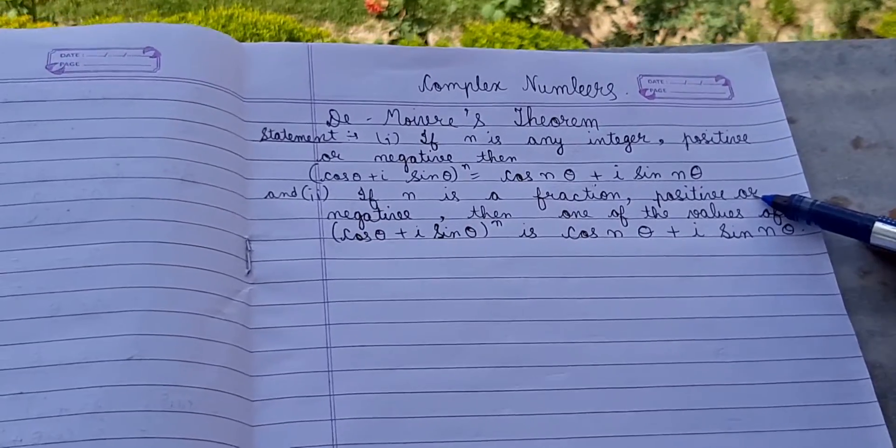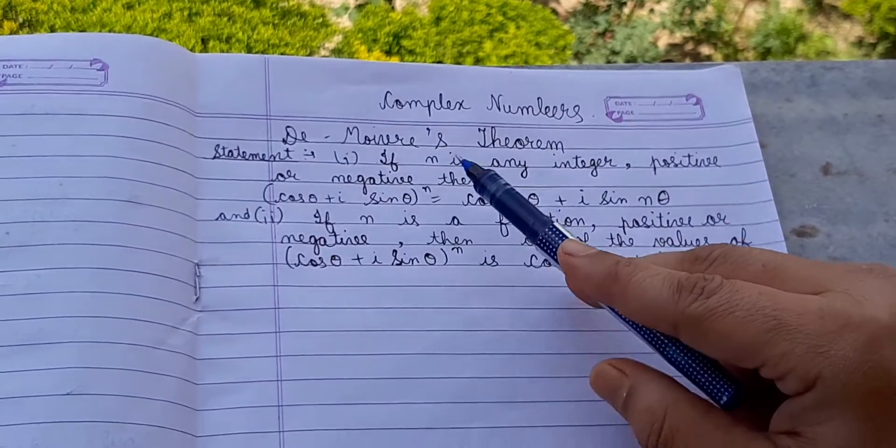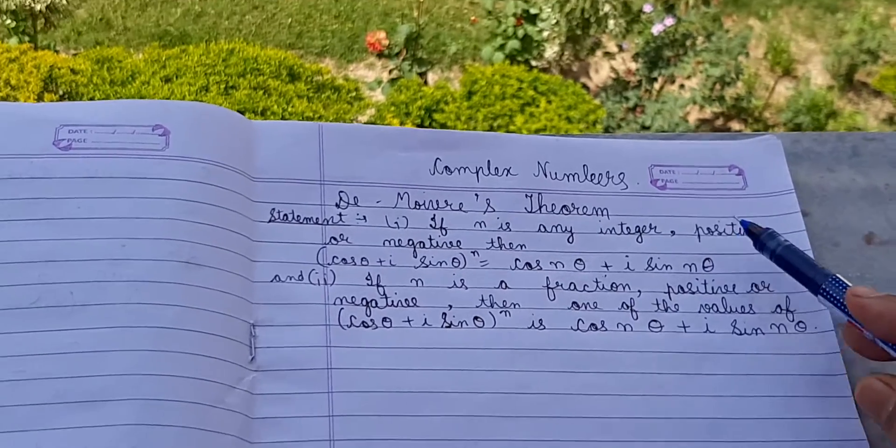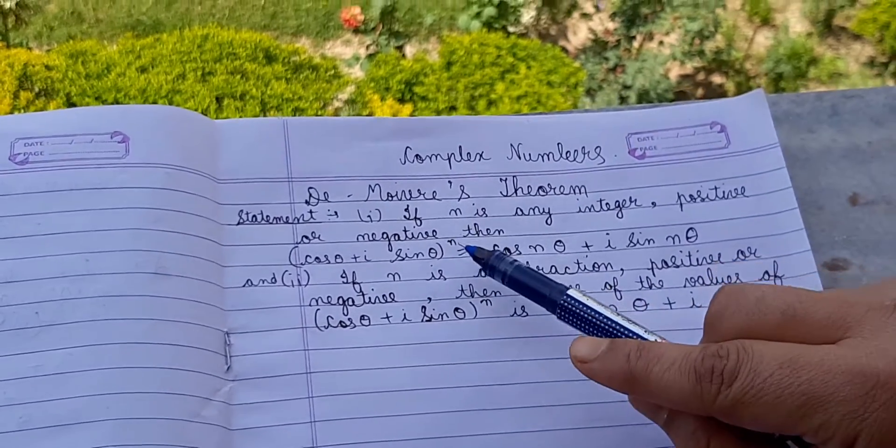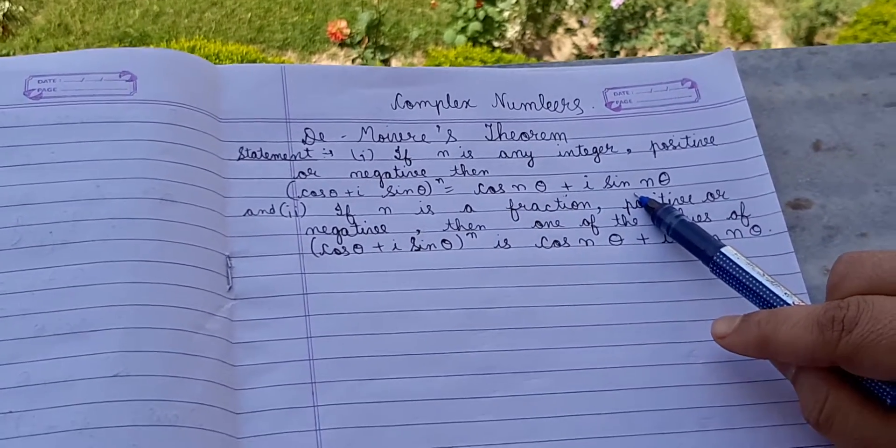First of all, De Moivre's theorem. You have to learn this statement. The statement: if n is any integer, positive or negative, then (cos θ + iota sin θ) raised to power n equals cos nθ + iota sin nθ.